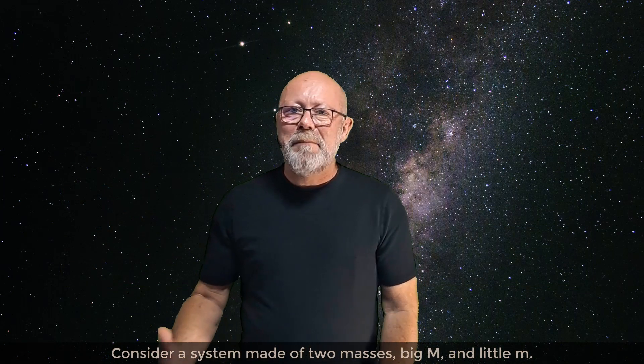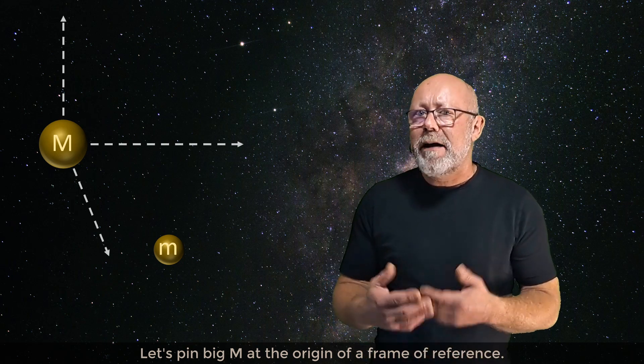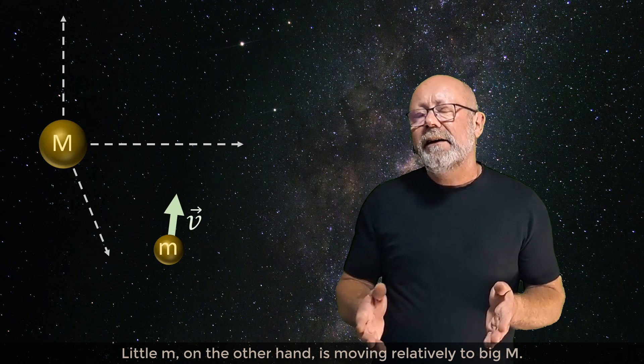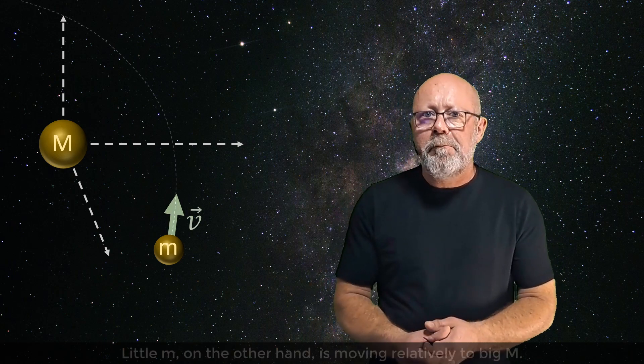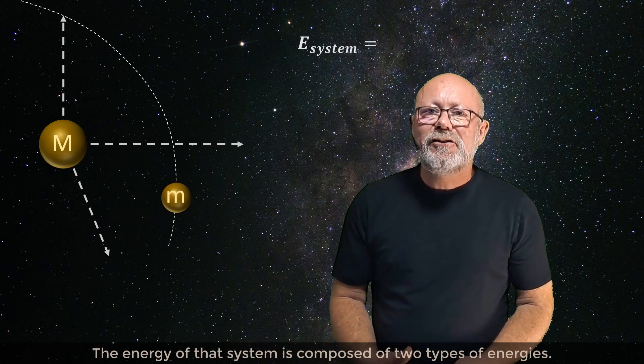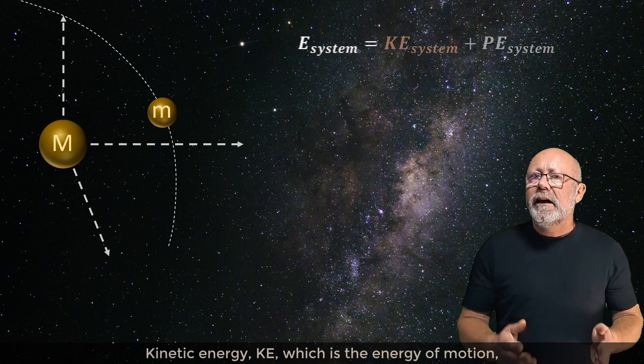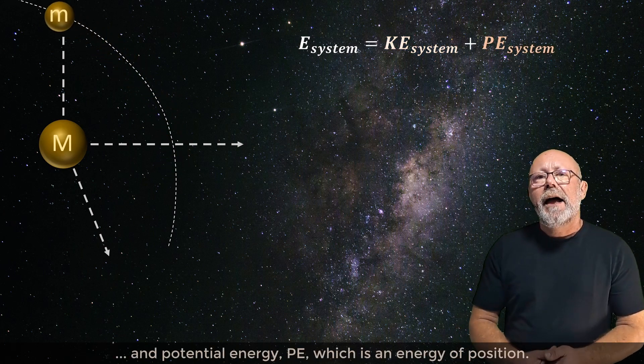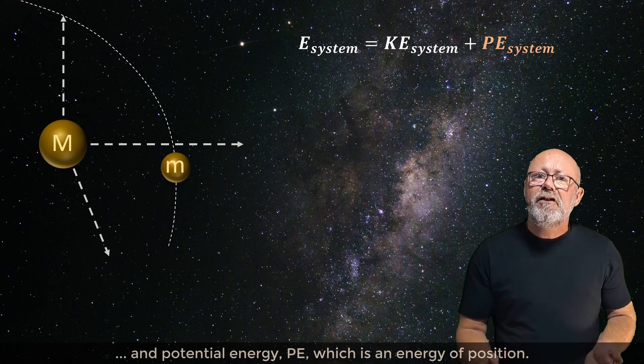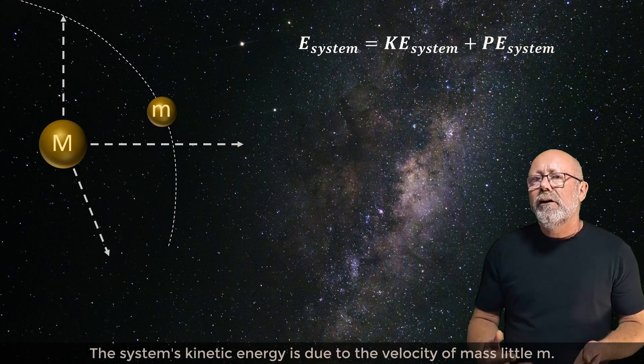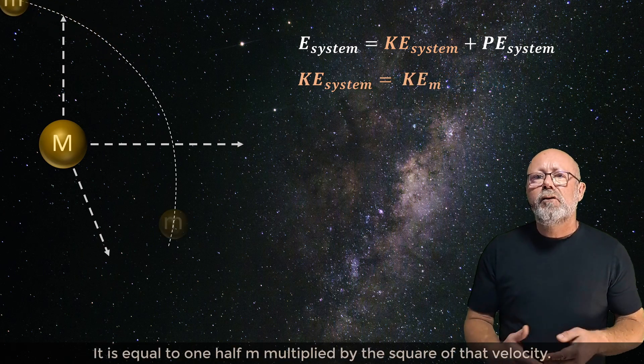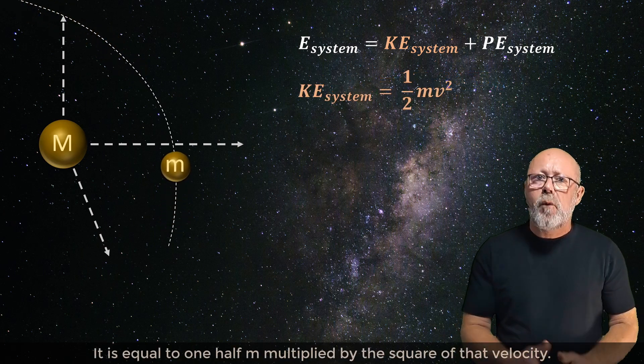Consider a system made of two masses, big M and little m. Let's pin big M as the origin of a frame of reference. Like this, we can make it motionless. Little m, on the other hand, is moving relatively to big M. The energy of that system is composed of two types of energies: kinetic energy KE, which is the energy of motion, and potential energy PE, which is an energy of position. The system's kinetic energy is due to the velocity of mass little m. It is equal to one half m multiplied by the square of that velocity.